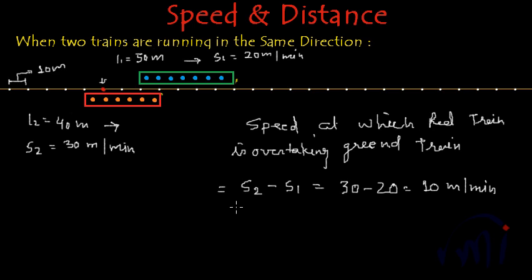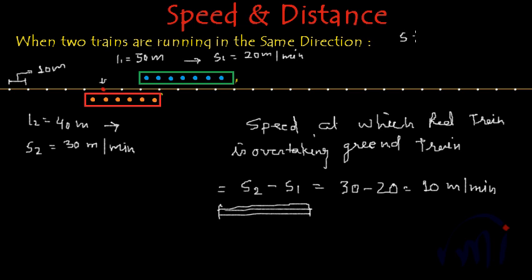We conclude that the speed at which this overtaking takes place is actually the difference of their speeds. So the new relative speed S = S2 − S1, or simply the difference of their speeds.